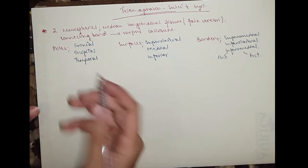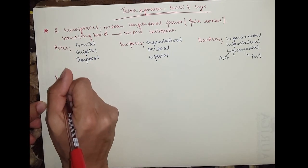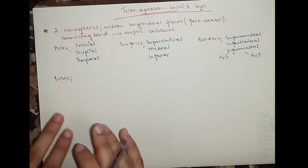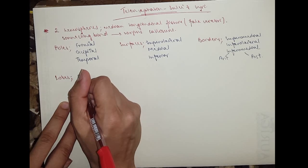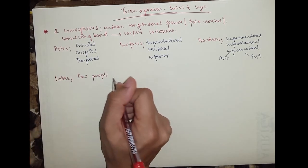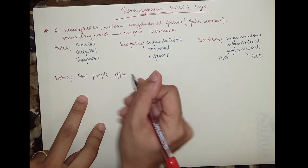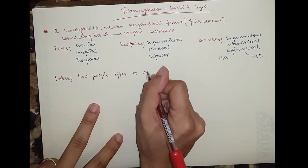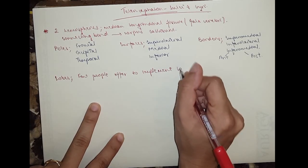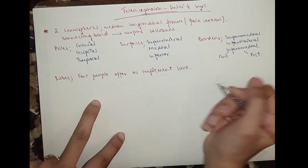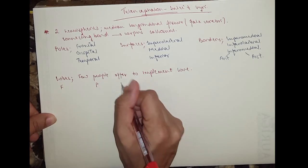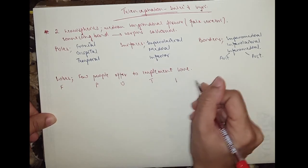Now we move on to the lobes. We've got six lobes in the cerebrum, and we have a mnemonic for this: 'Few people offer to implement love.' So the letters are F, P, O, T, I, and L.